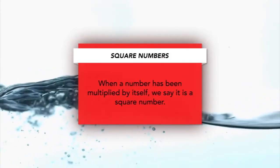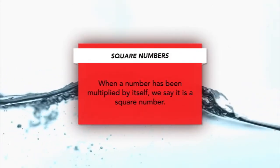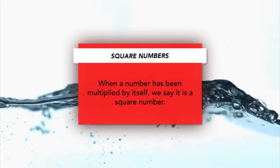Square numbers. Basically when a number is multiplied by itself, we call it a square number.